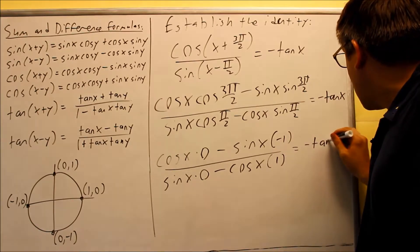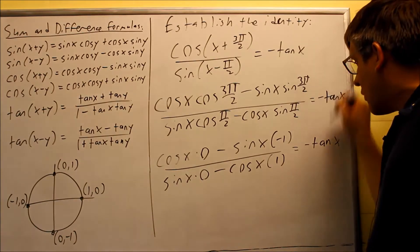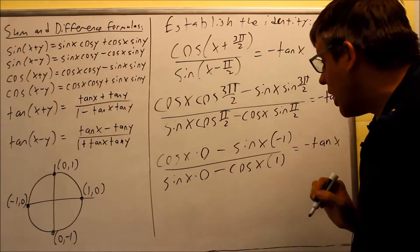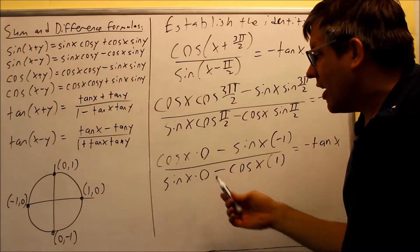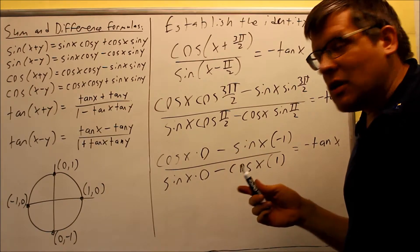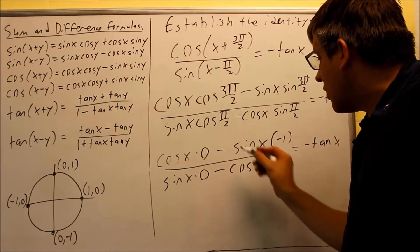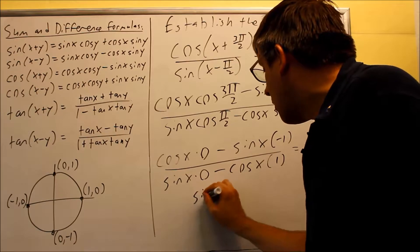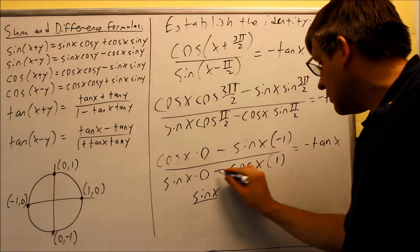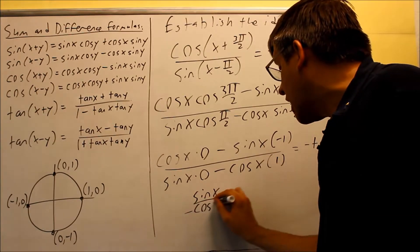So I'm just bringing down the right-hand side. I haven't done anything with that. The negative tan just kind of follows down to the problem. I want to do more simplifying. 0 times anything is 0. So that part cancels out. Negative negative gives me a positive sine x. On the bottom, I get negative cosine x.